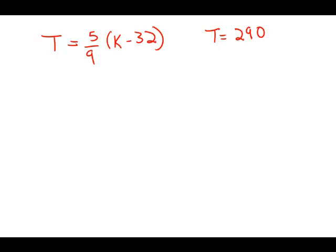If t equals 5 ninths of the quantity k minus 32, and if t equals 290, then k equals what? Incidentally, you may recognize this as a conversion equation between Fahrenheit and Celsius, but that's not really important here — we just need to do the algebra, so we plug in 290.